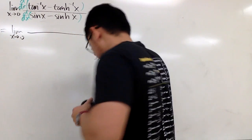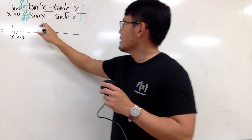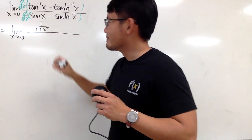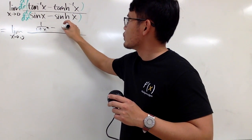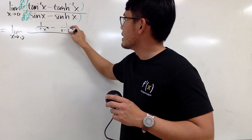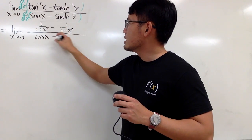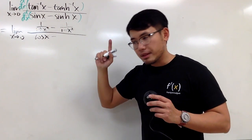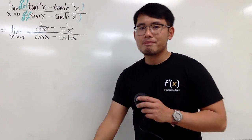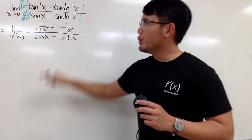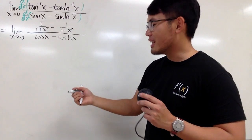What's the derivative of inverse tangent? It's 1 over 1 plus x squared. And then the minus — the derivative of inverse hyperbolic tangent is 1 over 1 minus x squared. And then the derivative of sine is positive cosine, and keep the minus, because the derivative of sinh x is positive cosh.